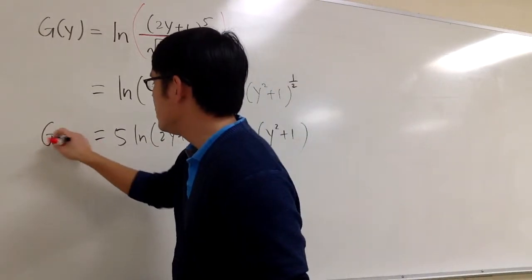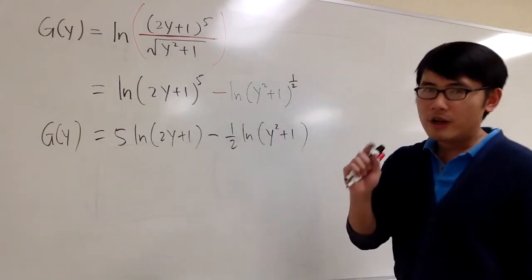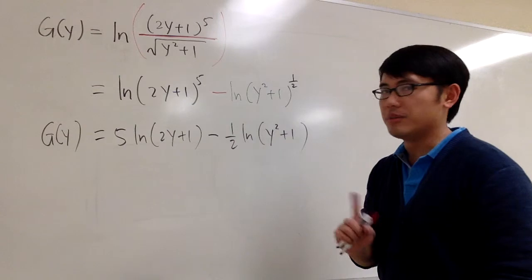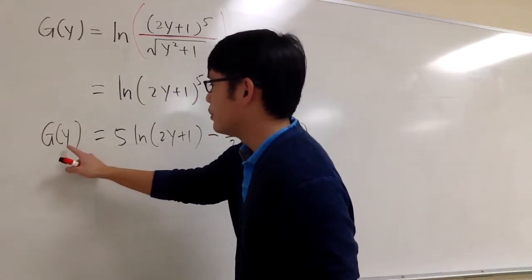And still, this is g of y. It's just the function. And once again, the y is just like the x in our situation. We are not doing implicit differentiation because the function is defined by using the variable y.